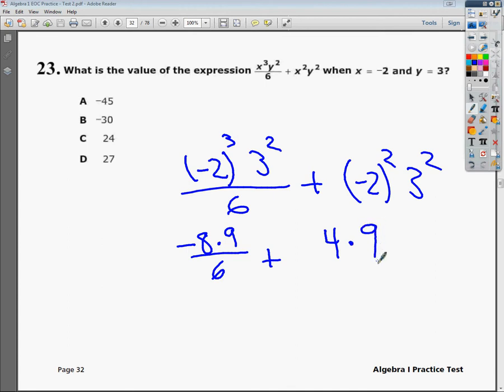So 4 times 9 is 36. Negative 8 times 9 is negative 72, and if I divide that by 6, it gives me negative 12. And I do negative 12 plus 36, and it should give me positive 24.